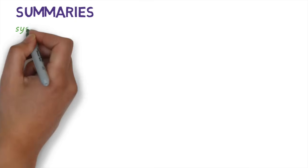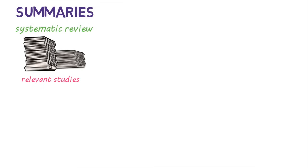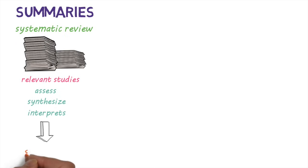A systematic review systematically identifies all the relevant studies on a particular topic, assesses the quality of each study, synthesizes and interprets the findings, and presents an impartial, unbiased, and balanced summary of the evidence.